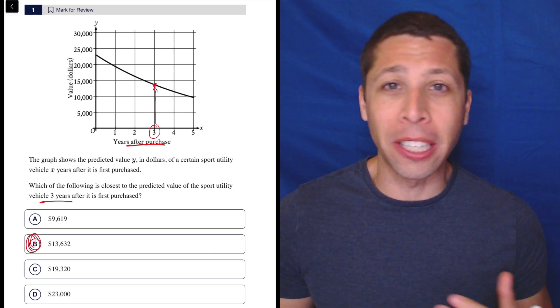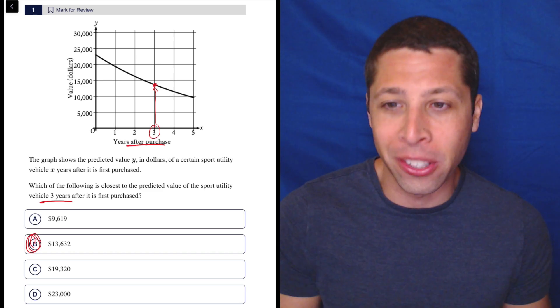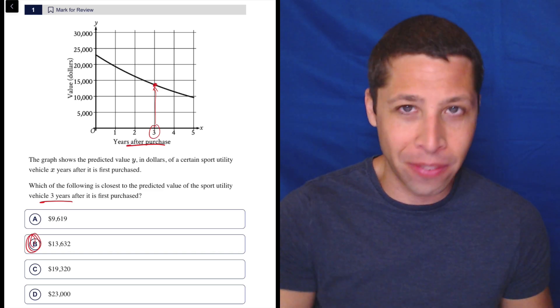And in this case, it'd be impossible to really confuse them, right? Because one, two, three, four, five are very different numbers than 5,000, 10,000, 15,000.